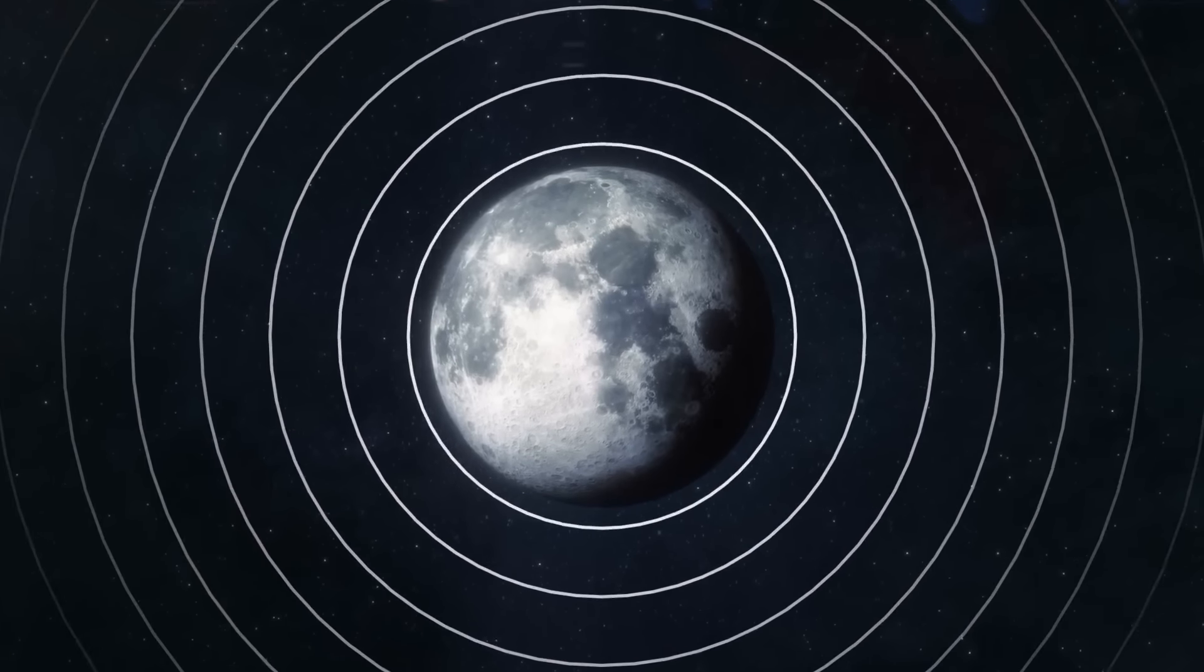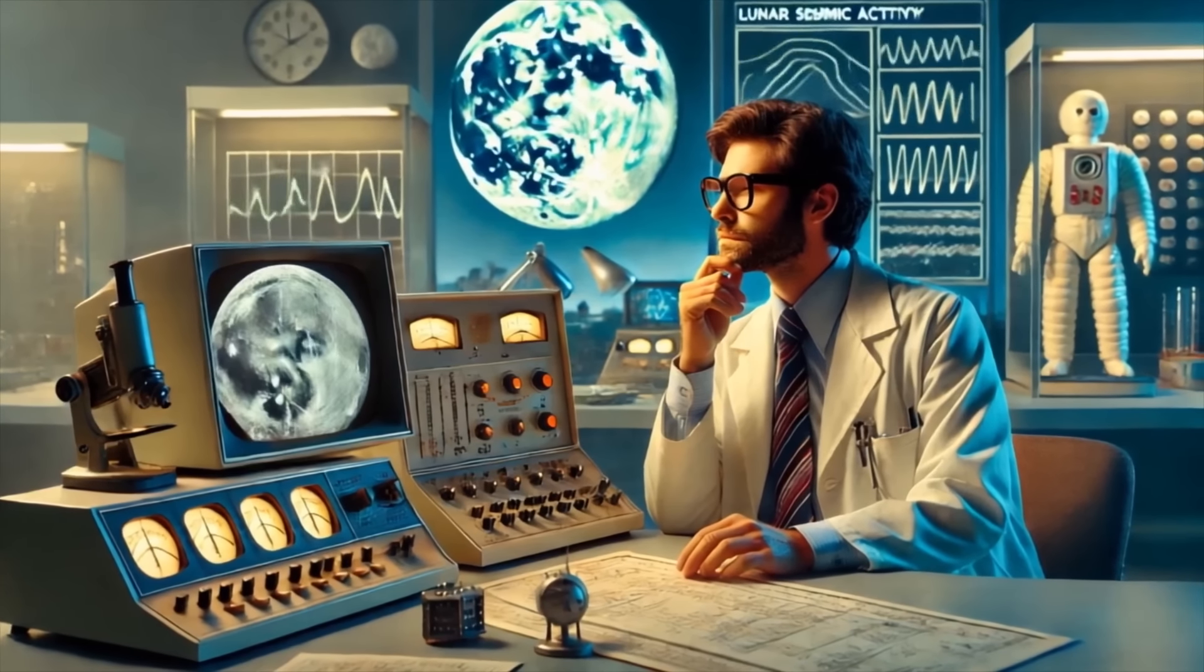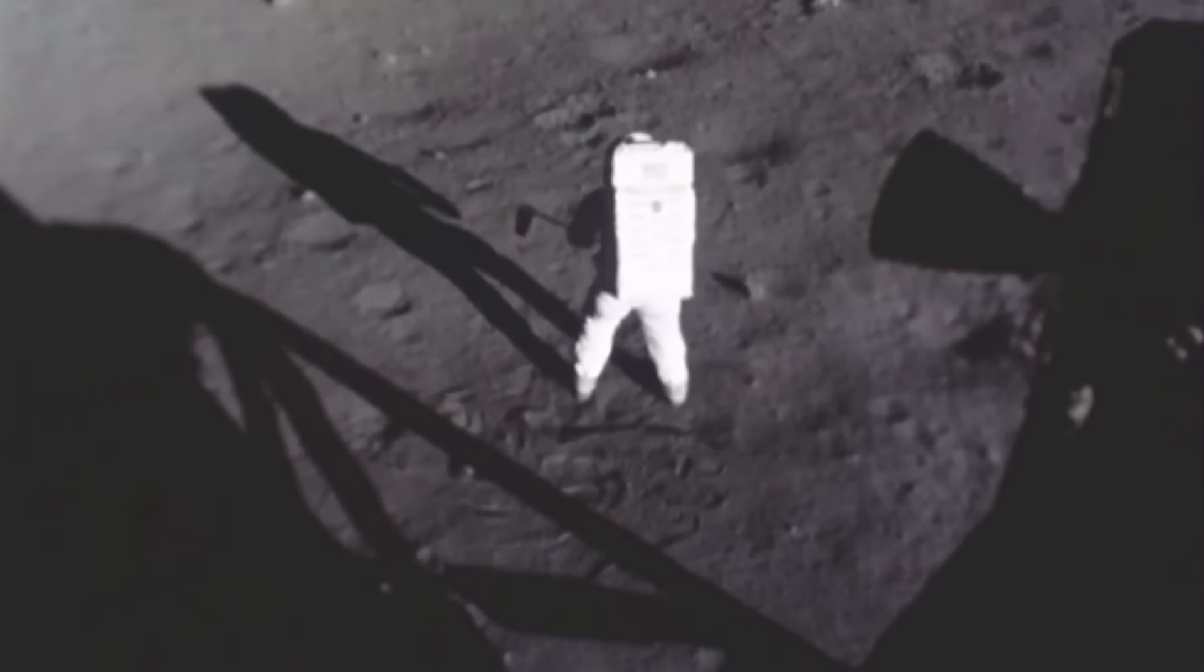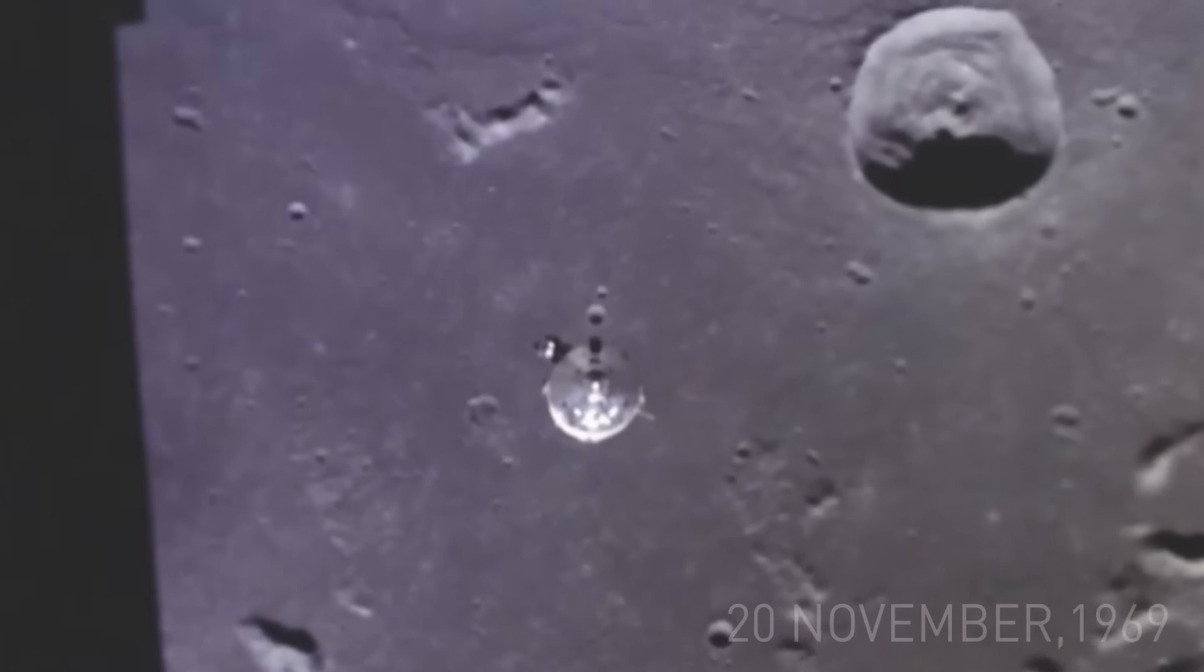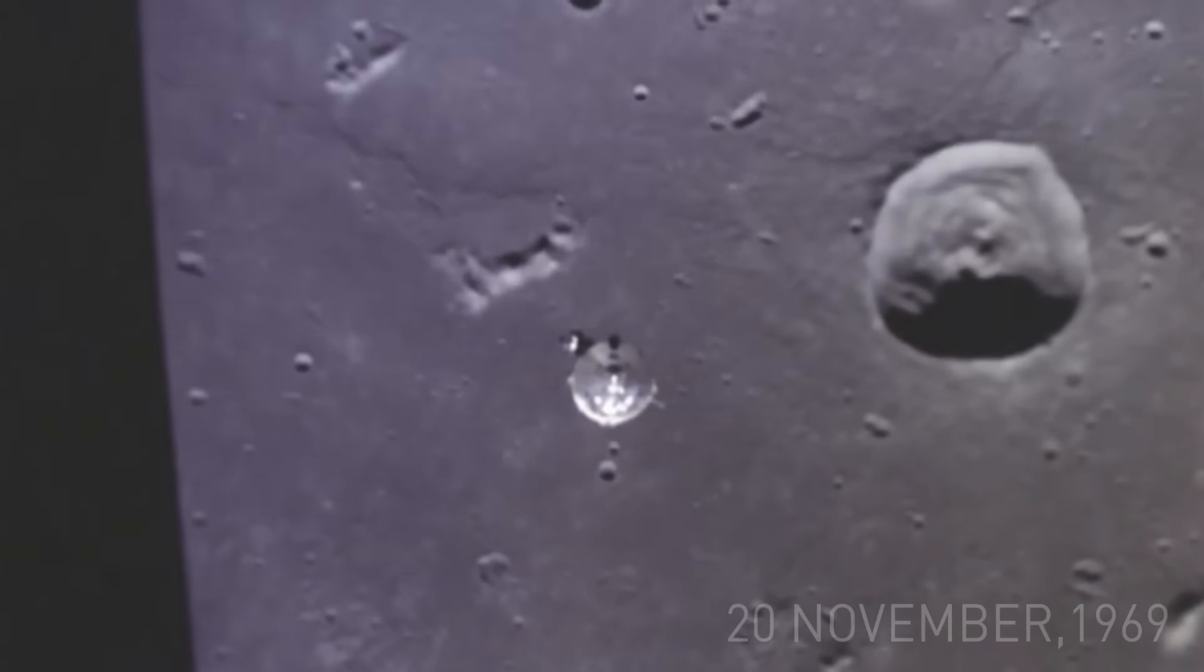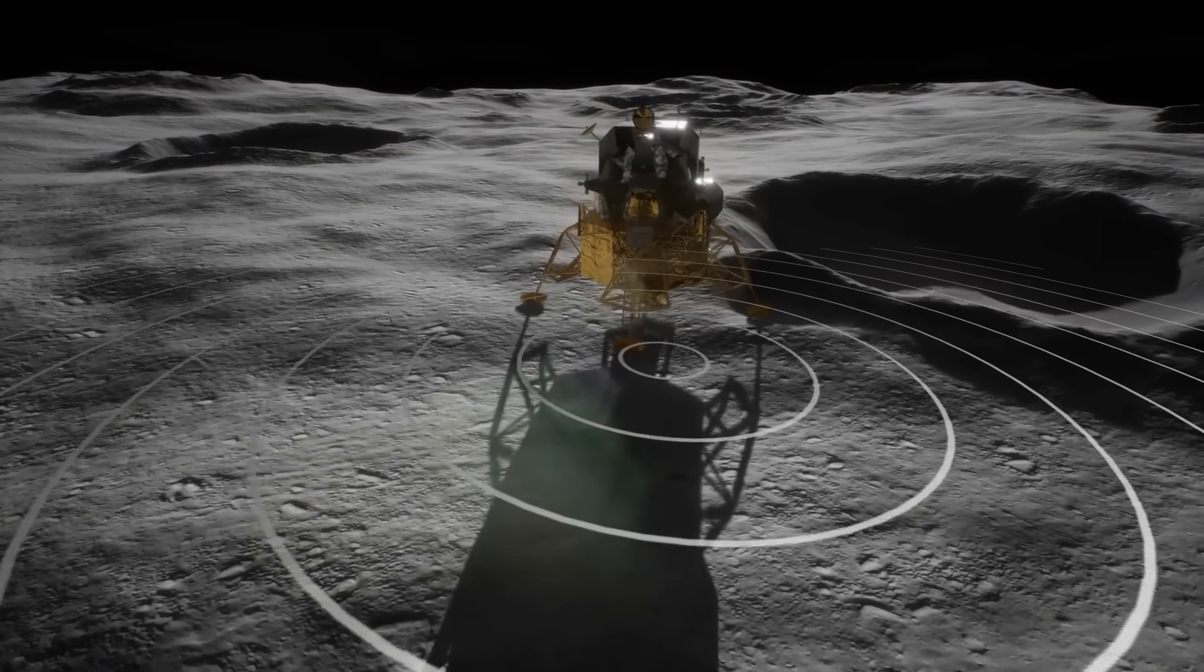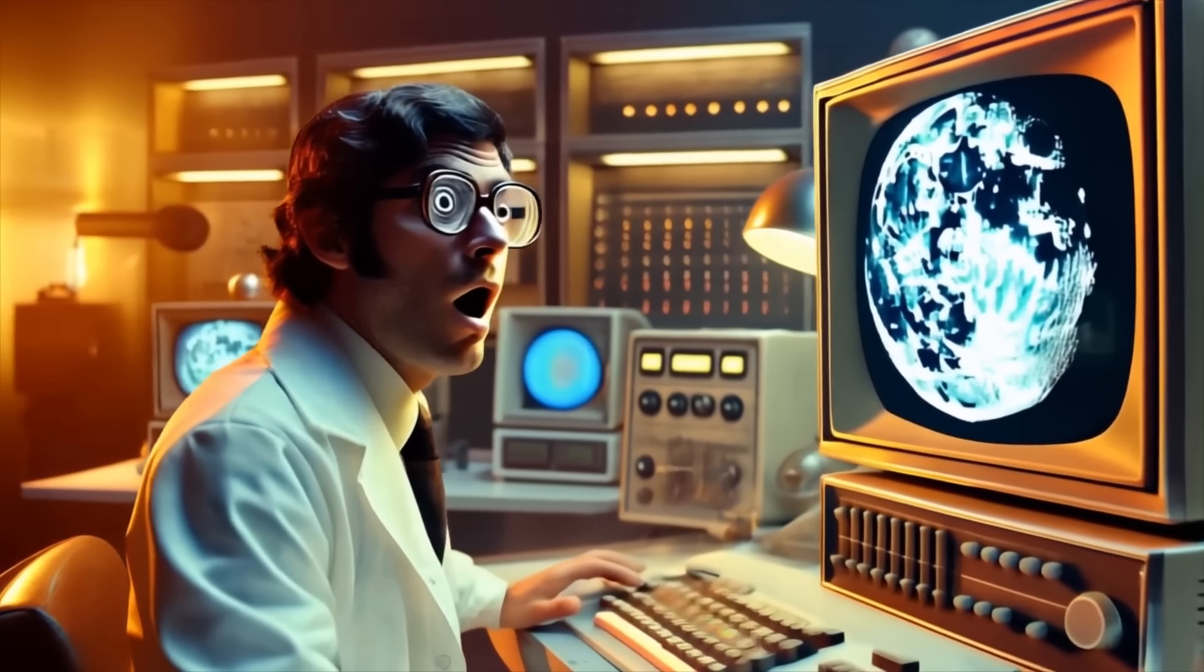Then there's also the claim that the moon rings like a bell. For almost a decade, between 1969 and 1977, seismometers installed on the moon by the Apollo missions kept recording moonquakes. The moon was reported to be ringing like a bell during such quakes, especially shallow ones. On the 20th of November 1969, Apollo 12 deliberately crashed the ascent stage of its lunar module into the surface of our natural satellite. According to NASA, after that, the ringing continued for almost an hour.